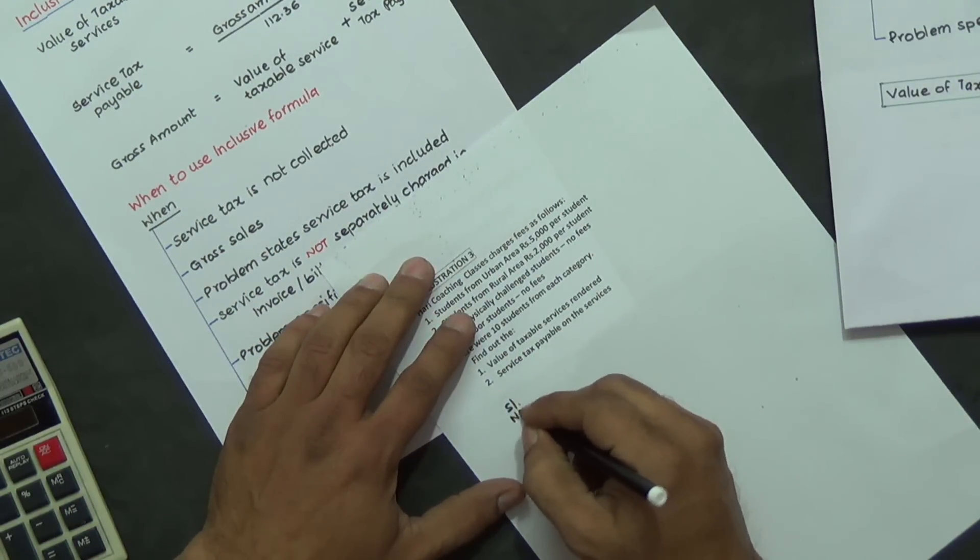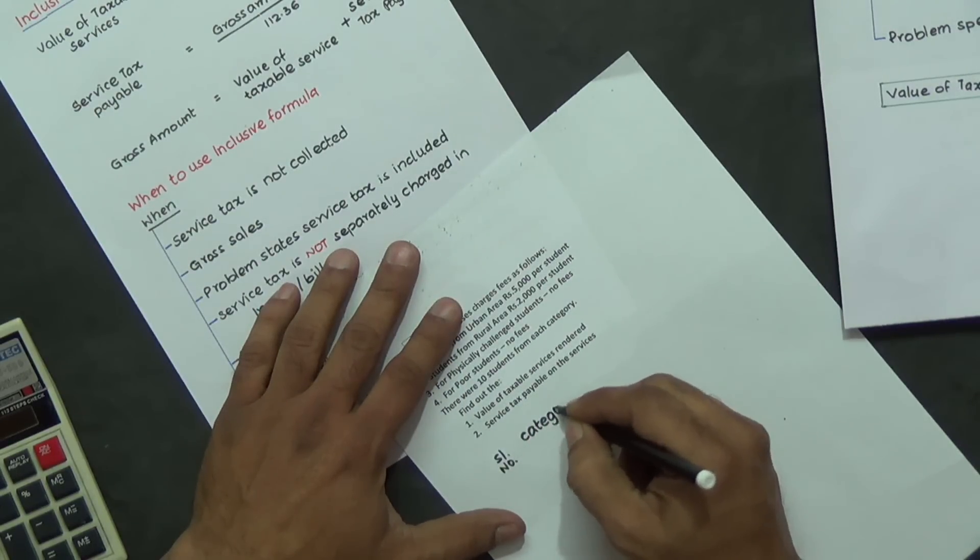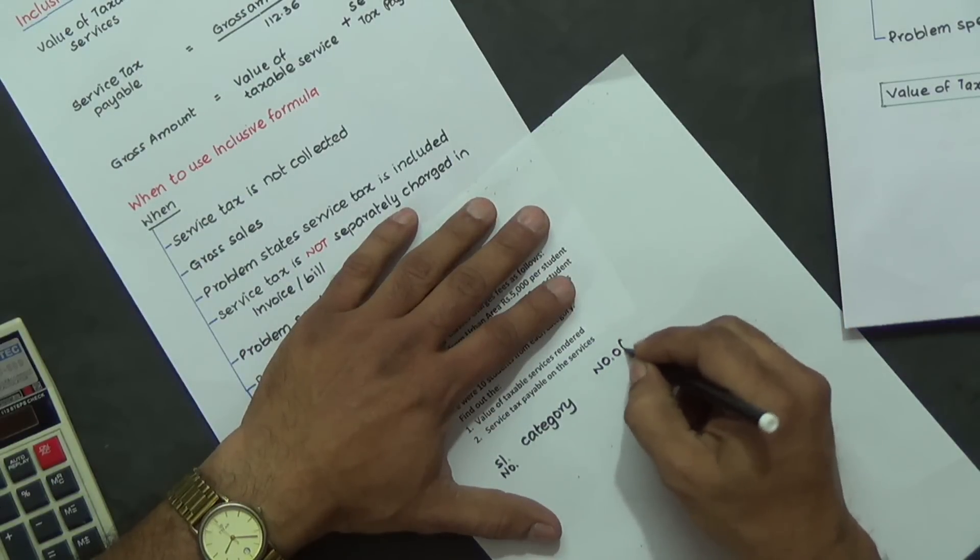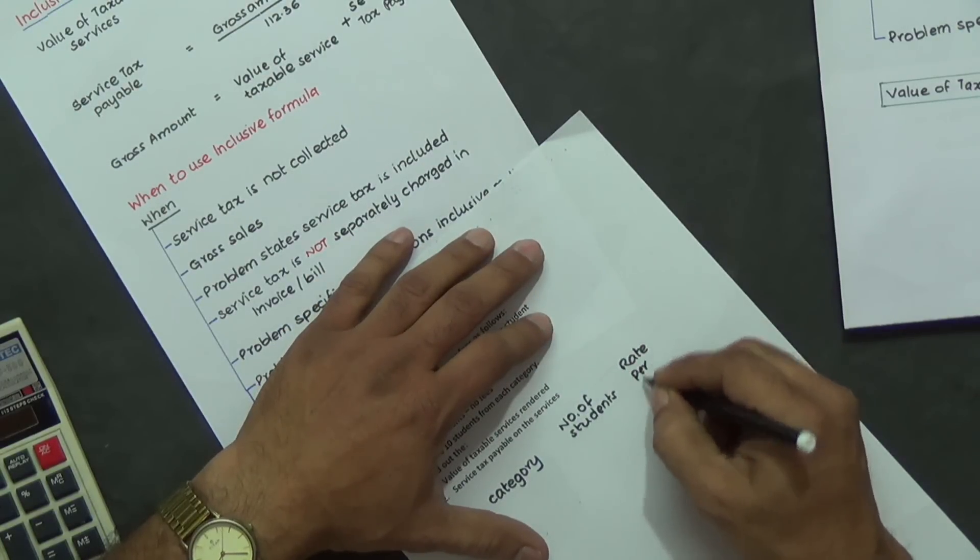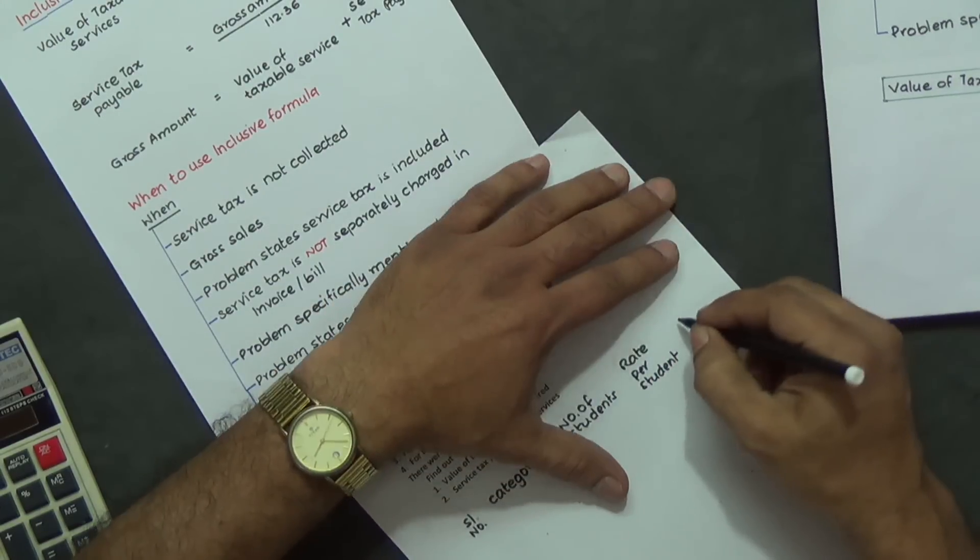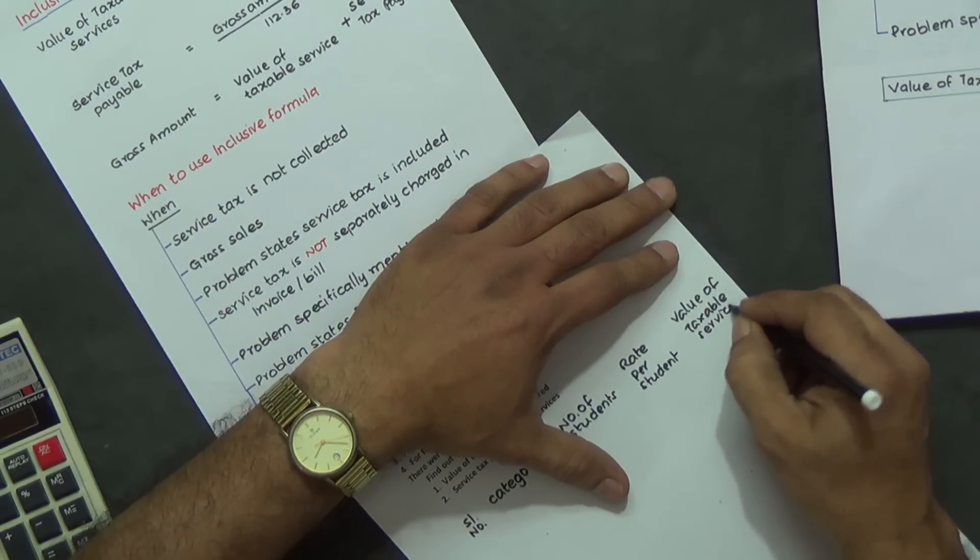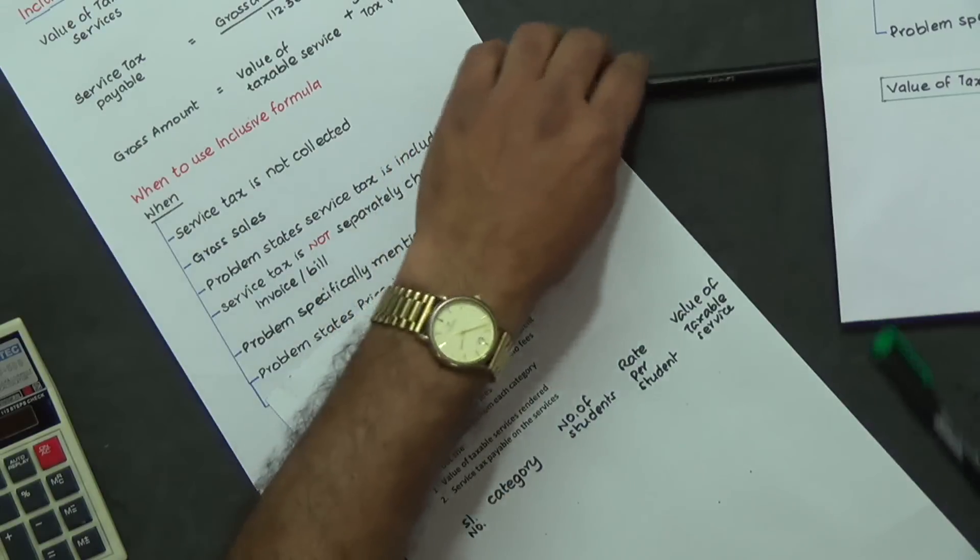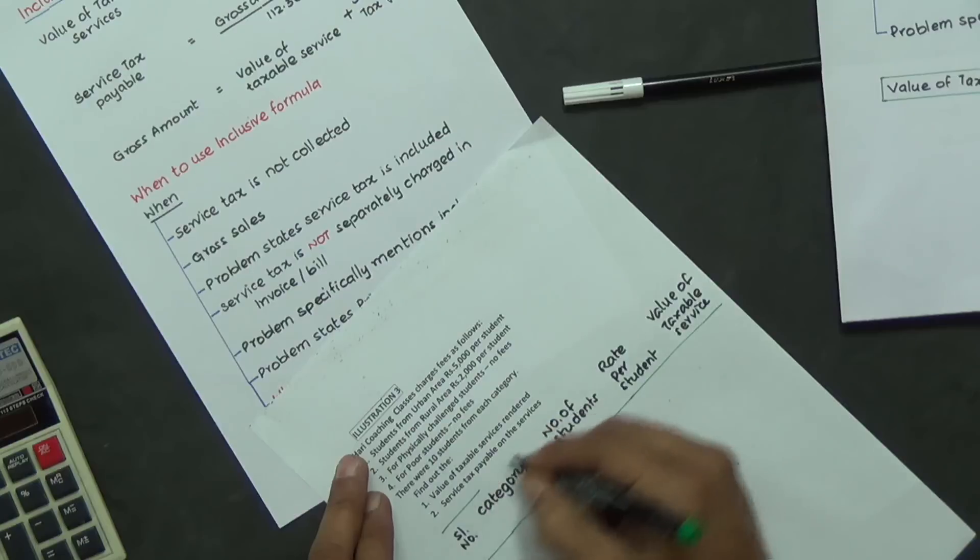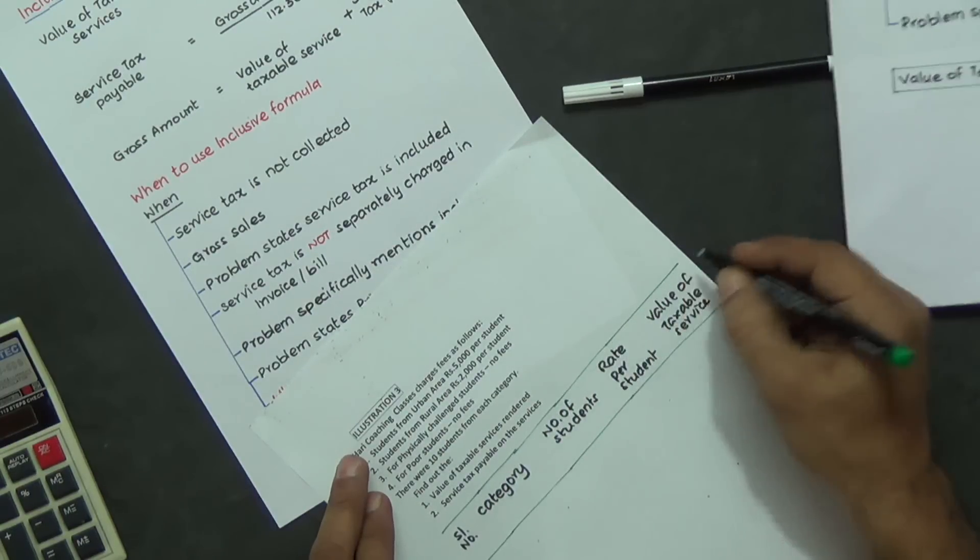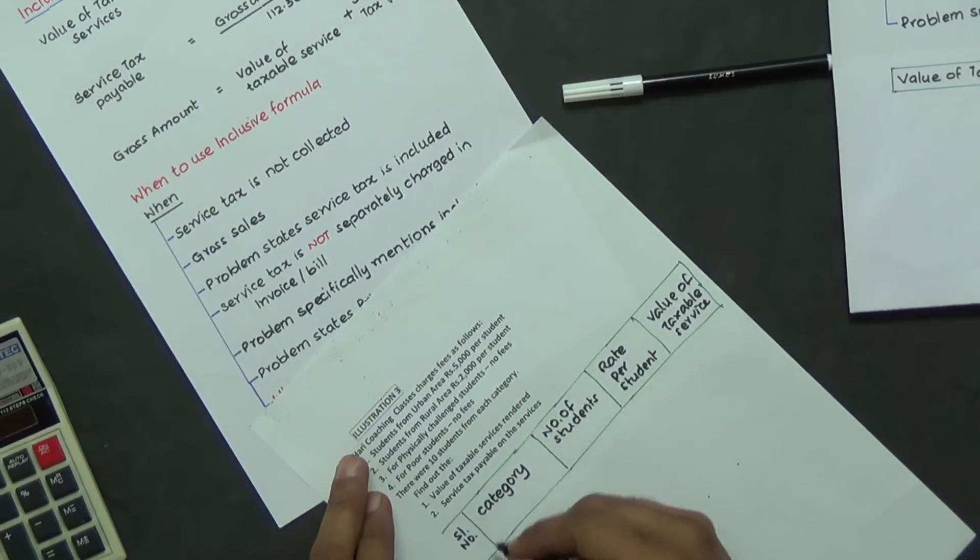Serial number, then the category, number of students, rate per student, and value of taxable service. You can give a rough ruling with your pen, preferably with a different color. There's no need to be perfect in the pen ruling. It's the matter that's more important, not the pencil or pen ruling.